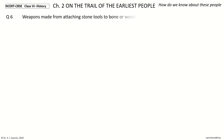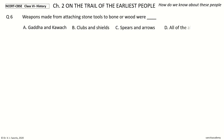Question 6: Weapons made from attaching stone tools to bone or wood were ___. The options: gada and kawach, clubs and shields, spears and arrows, all of the above. Your time. And the answer is spears and arrows.